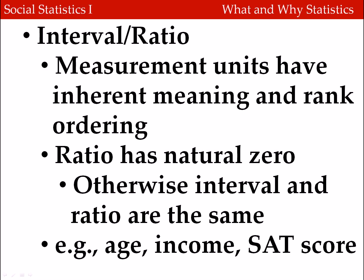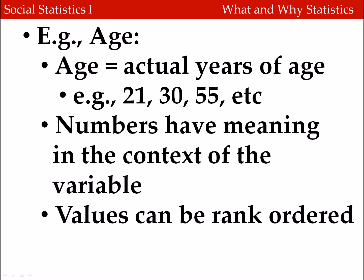Finally, we have interval and ratio variables. Here we have measurement units that have some meaning in the context of the variable and can be rank ordered. The difference between interval and ratio is that ratio has a natural zero and interval does not, but for the purposes of this course, I'll treat them as basically synonymous. Examples of interval/ratio variables include age, income, or SAT score. For age, we can measure it in actual years — someone can be 21, 30, or 55. The numbers have an exact meaning, and values can be rank ordered: someone who's 30 is older than someone who's 21.